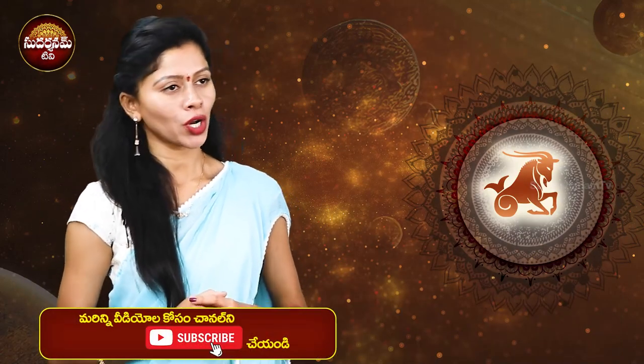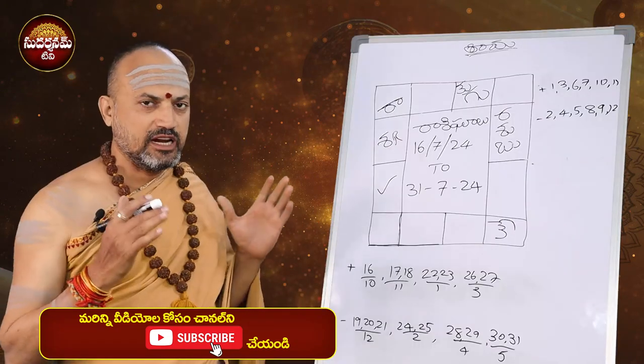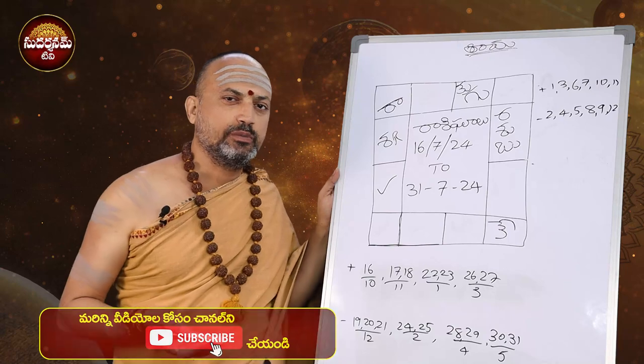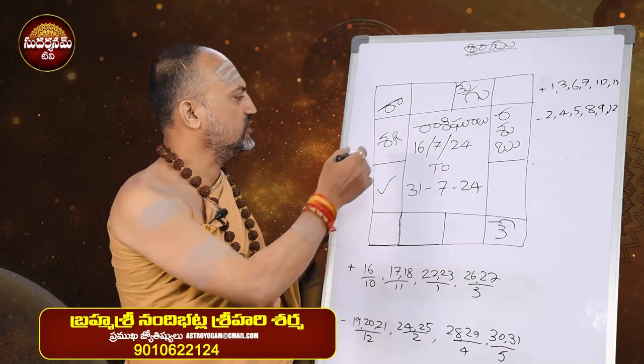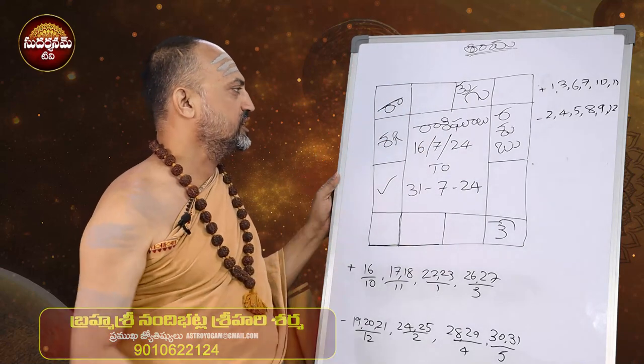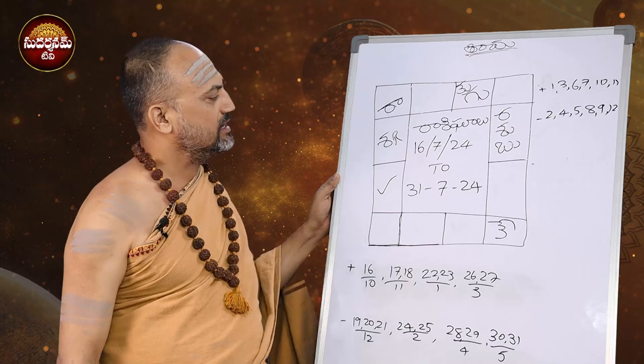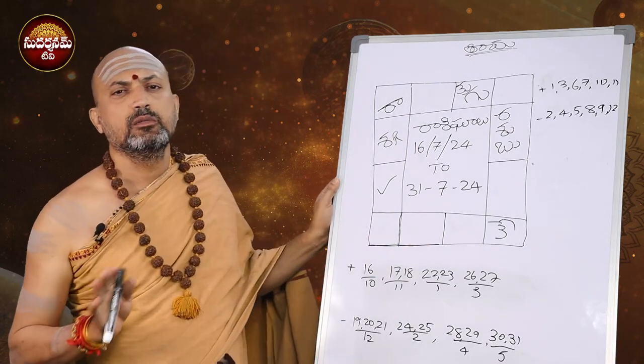For Makar Rashi individuals, let's see how the planetary movements are positioned. In the second house is retrograde Rahu. In the fifth house are Kuja and Guru. In the sixth house are Ravi, Shukra, and Budha together. In the seventh house and ninth house is Ketu.